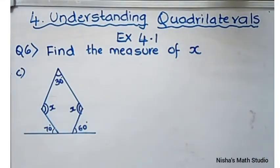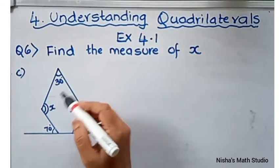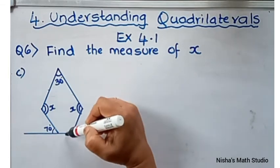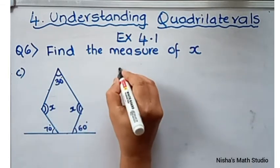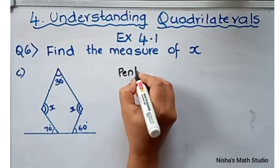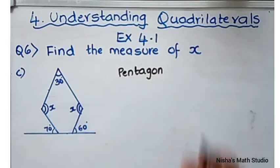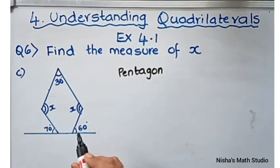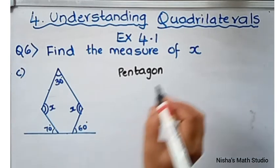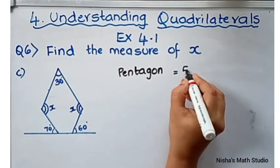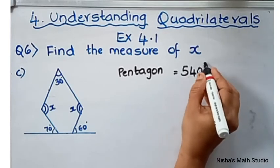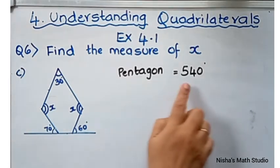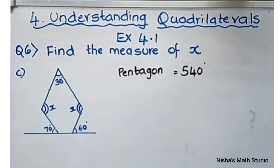Question number 6C. This polygon has 1, 2, 3, 4, and 5 sides, so it is a pentagon. We need to know the total sum of all angles of a pentagon, which is 540 degrees. The formula for interior angle sum is explained in my previous video.